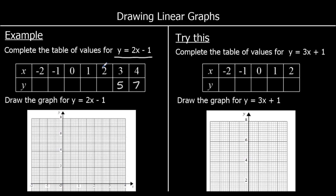Now substituting in x equals 2: 2 twos are 4, take away 1 is 3. Then x equals 1: 2 ones are 2, take away 1 is 1. And x equals 0: 2 zeros are 0, take away 1 is negative 1. Now x equals negative 1: 2 negative 1s are negative 2, and negative 2 take away 1 is negative 3. And x equals negative 2: 2 negative 2s are negative 4, negative 4 take away 1 is negative 5.